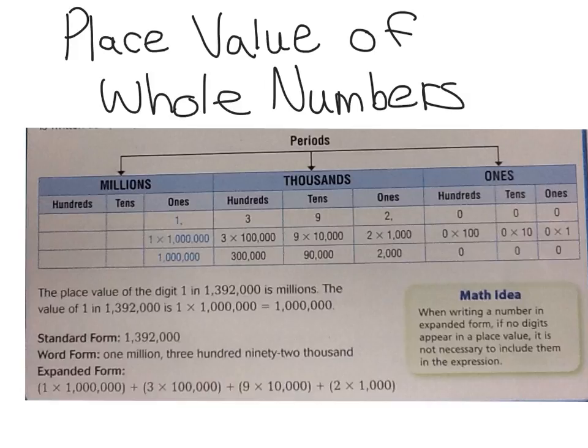Previously, expanded form for students used to be where you just wrote the value of each digit with plus signs in between. So I would write basically this bottom column: 1,000,000 plus 300,000 plus 90,000 plus 2,000 and then I would be done. So it would be just like that bottom column with a plus sign in between each of them.